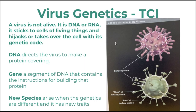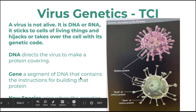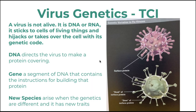A virus, shown in your TCI textbook, is just genetic information — it is not alive. It is made out of nucleic acid, typically DNA or RNA. It sticks to the cells of living things and hijacks or takes over the cell with its genetic code. The DNA then directs the virus to make more protein covering. A new species arrives when the mechanism changes the protein so much that it becomes a new species with new traits.